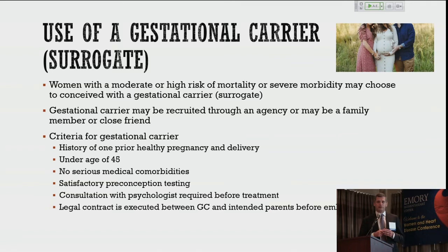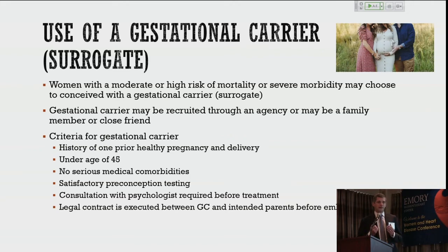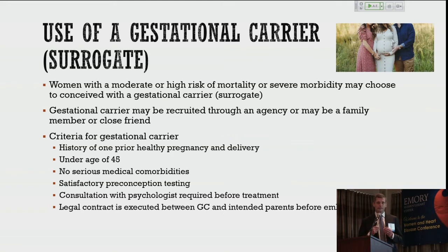Women with a moderate or high risk of mortality or severe morbidity can still get pregnant and have a family — this involves using a gestational carrier. A gestational carrier is someone who will carry the pregnancy on behalf of the patient, most often recruited through an agency. These agencies integrate a law firm and an agency with enough medical expertise to recognize who is a good surrogate. Sometimes, rarely, this is a family member or close friend, but that's actually the exception, not the norm.